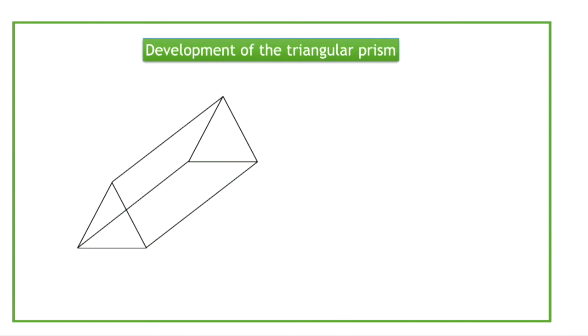To produce a triangular prism out of flat sheet material, we have to first identify its sides. We have three rectangular flat sides and two triangular end sides.